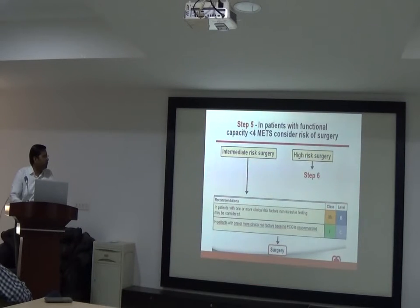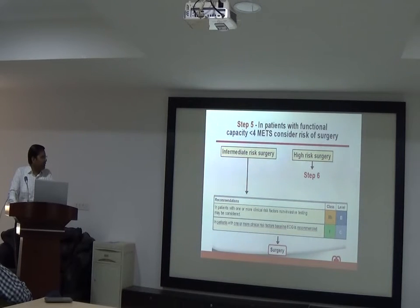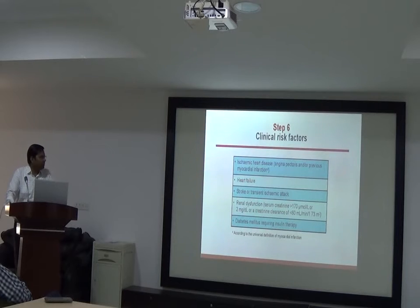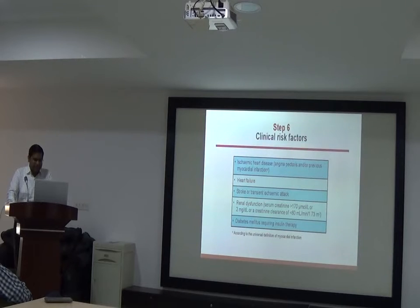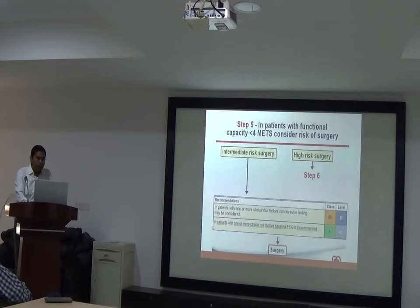For moderate or poor functional capacity — less than 4 METs — in intermediate risk surgery with one or more clinical risk factors, the risk factors include: systemic heart disease or prior MI more than 30 days, heart failure grade 1 or 2, prior stroke or TIA, renal dysfunction (creatinine more than 2 mg/dL or GFR less than 60), or diabetes mellitus requiring insulin therapy. If any risk factor is present with intermediate risk surgery, non-invasive testing should be considered.